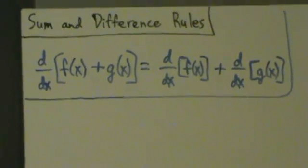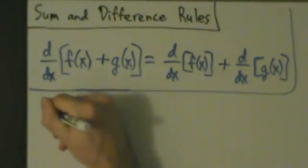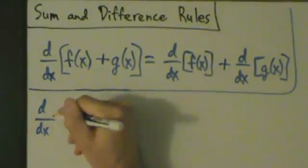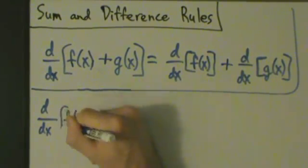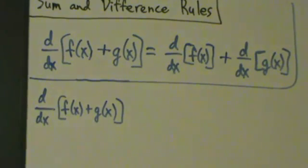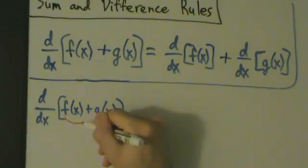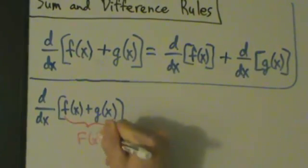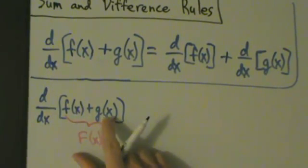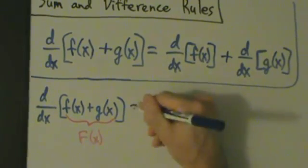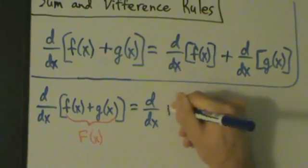These rules aren't really that surprising, given that the derivative is just a limit, and we know that limits behave in the same way. This is good because it tells you that derivatives behave pretty much how you would expect for sums and differences. We're going to start with d/dx of (f plus g) and show it equals the derivative of f plus the derivative of g. Let's call f(x) plus g(x) big F(x), so we have d/dx of big F(x).